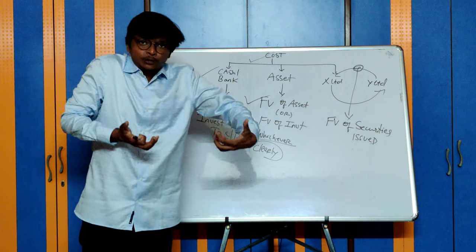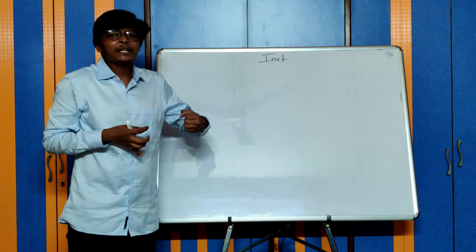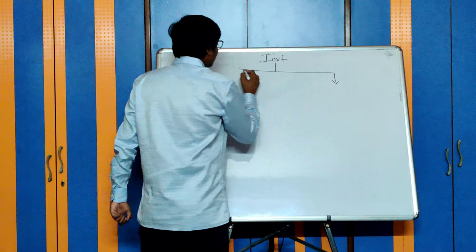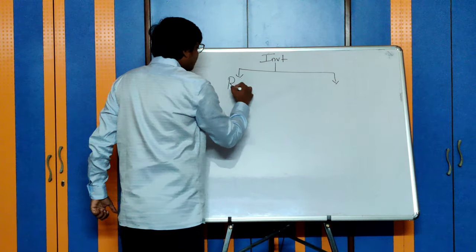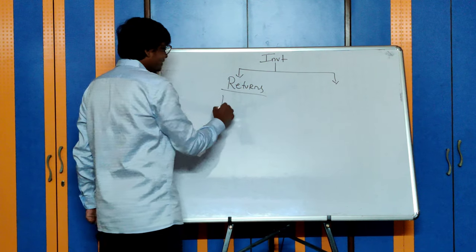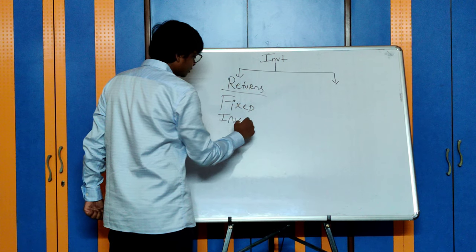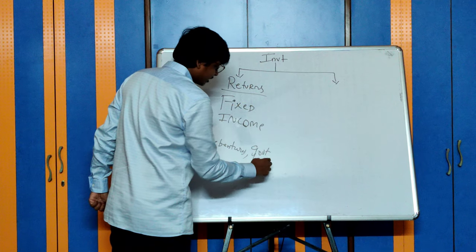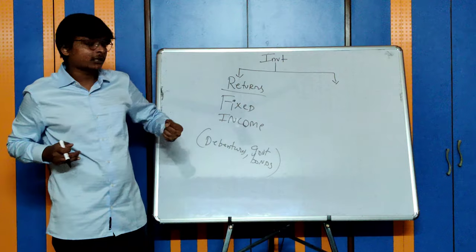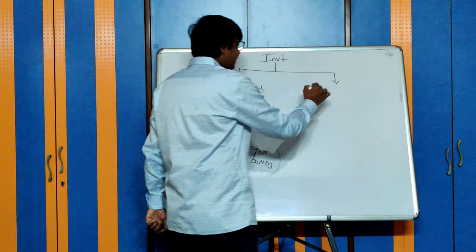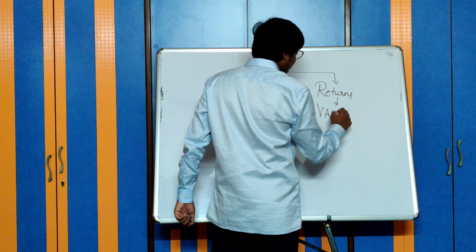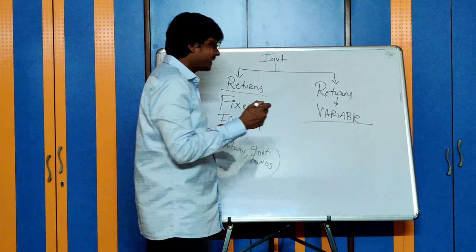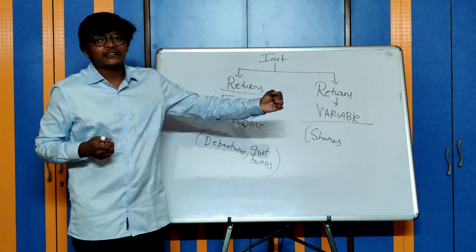Now let us see what are the different types of investments and how to account for them. Investment can be of two types. One, where I get returns every year — returns are guaranteed — known as fixed income securities. These include debentures, government bonds, etc., where when I make an investment, I get returns every year. Accounting for this is different. Another type is where my returns are variable — meaning returns depend on the company announcing them. Example: investment in shares. I cannot guarantee dividend income every year — only when the company where I have invested declares dividend will I receive it.